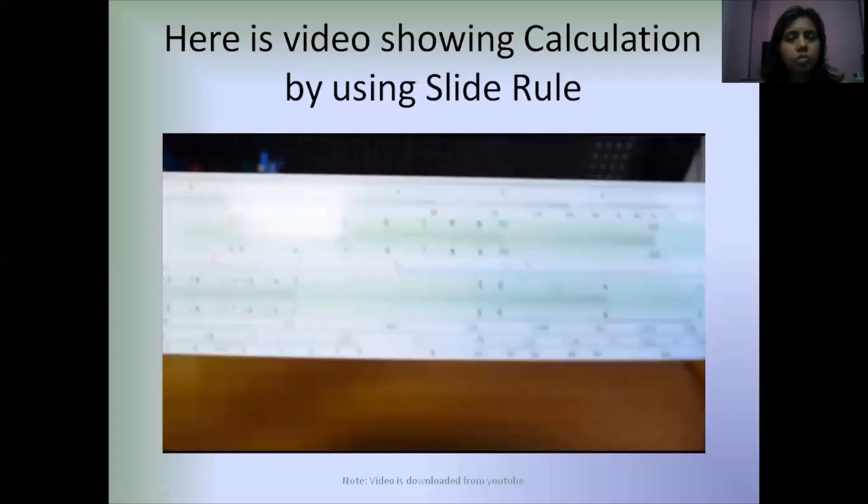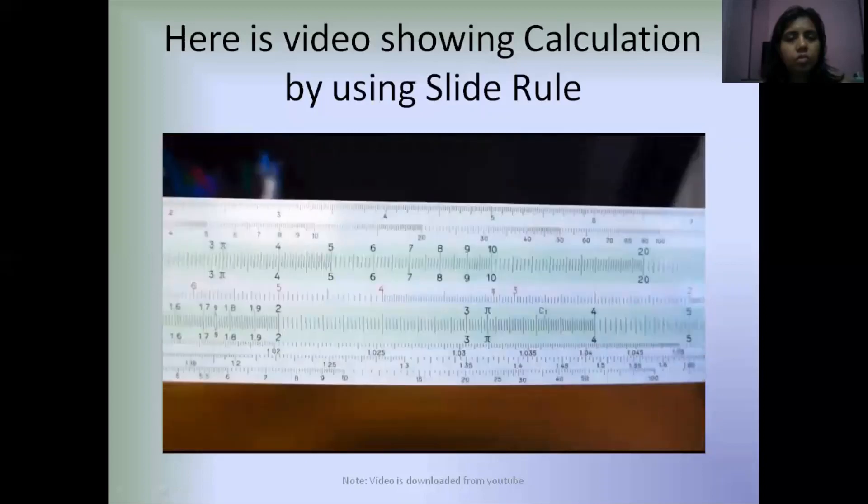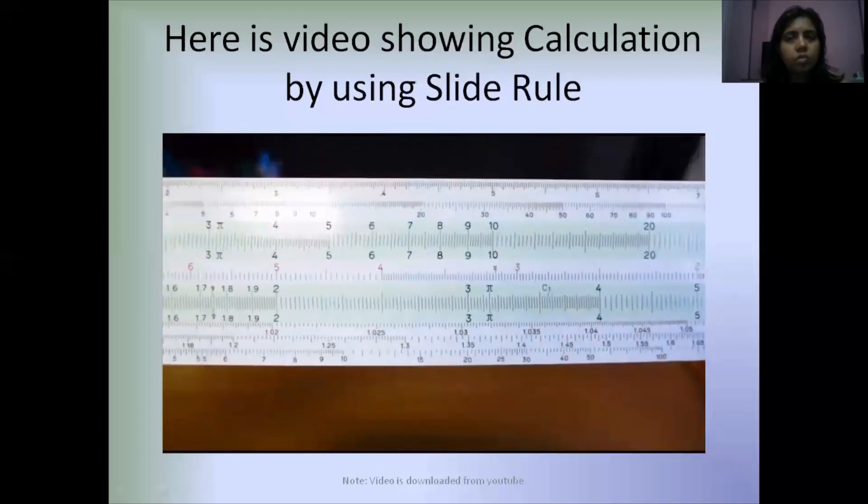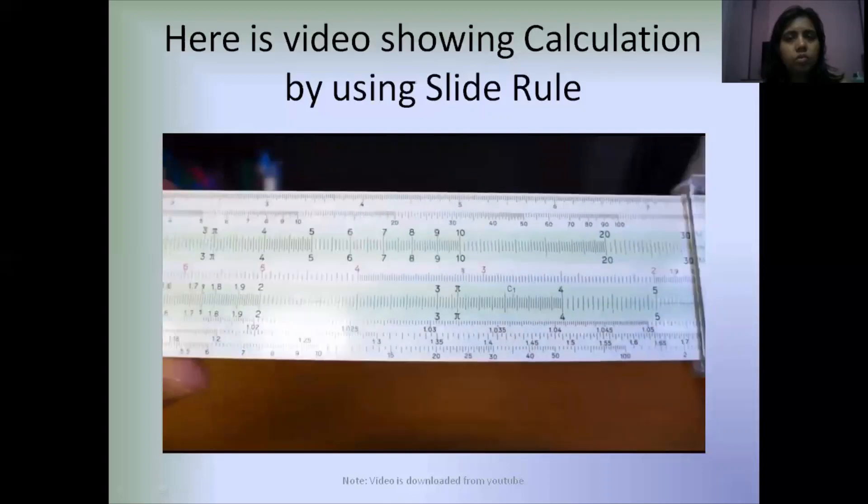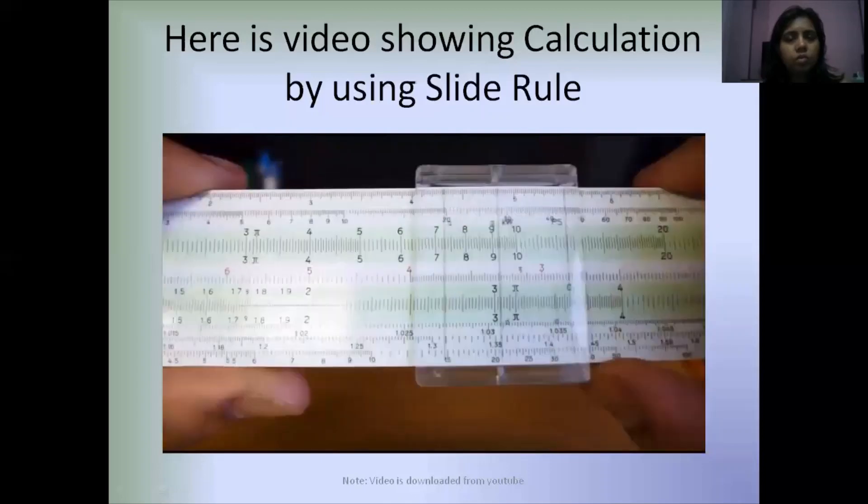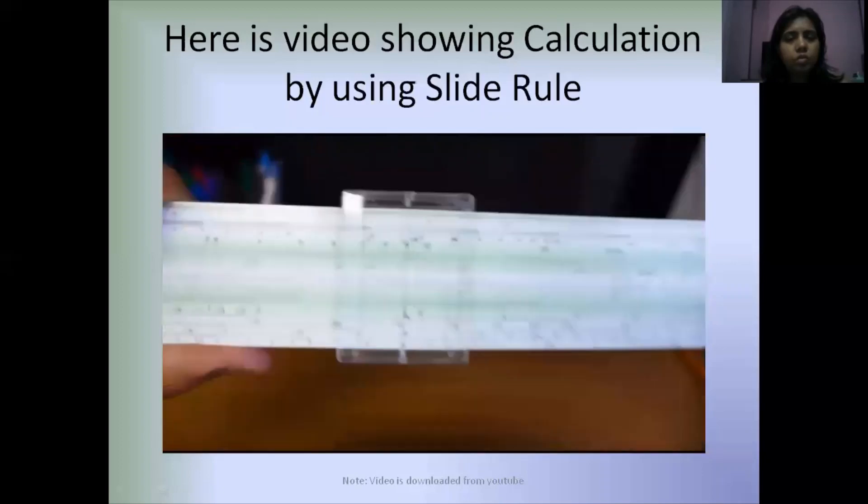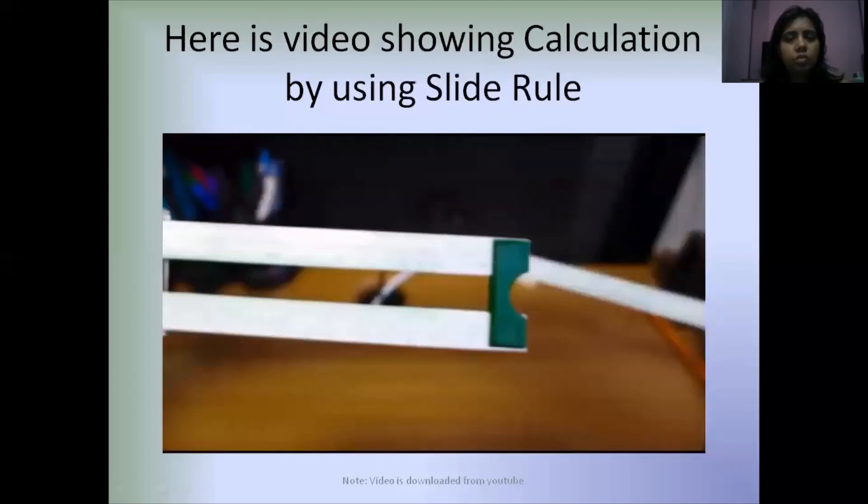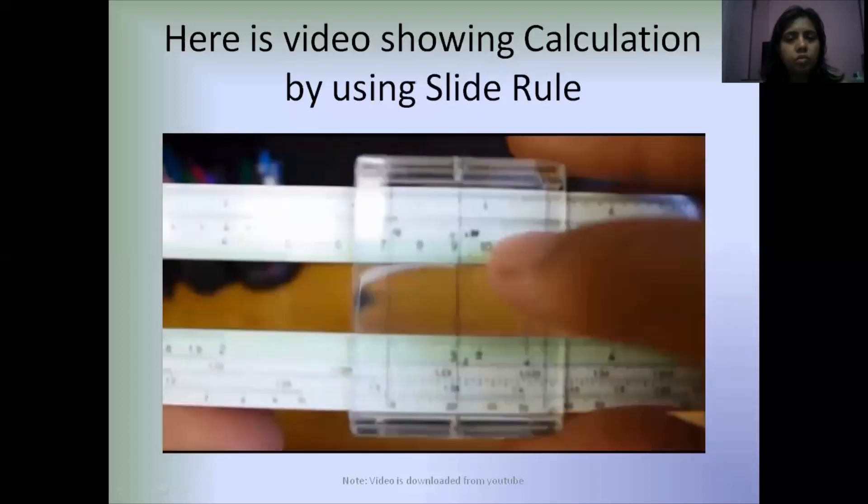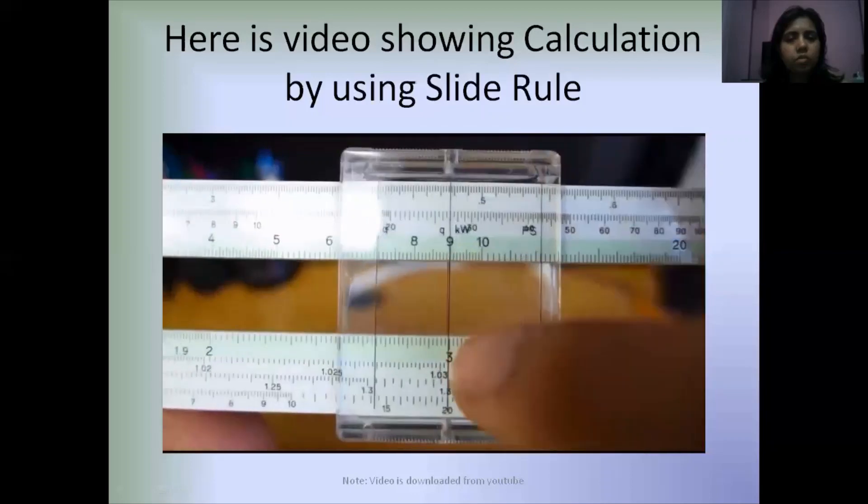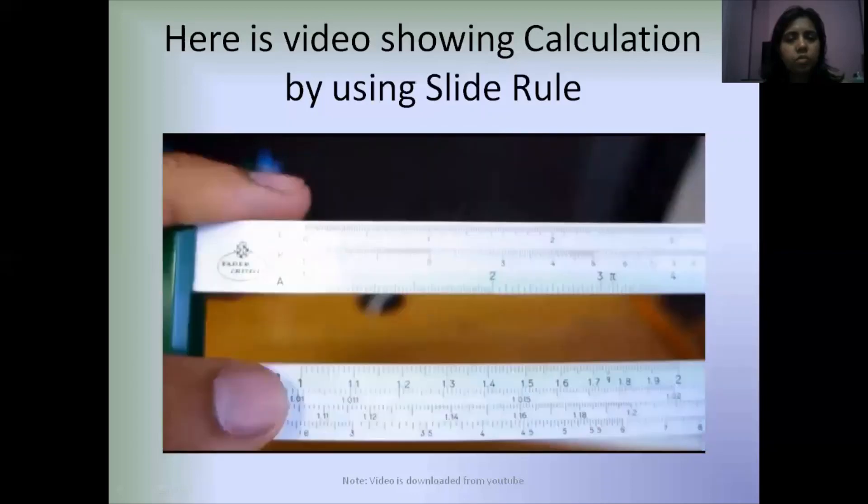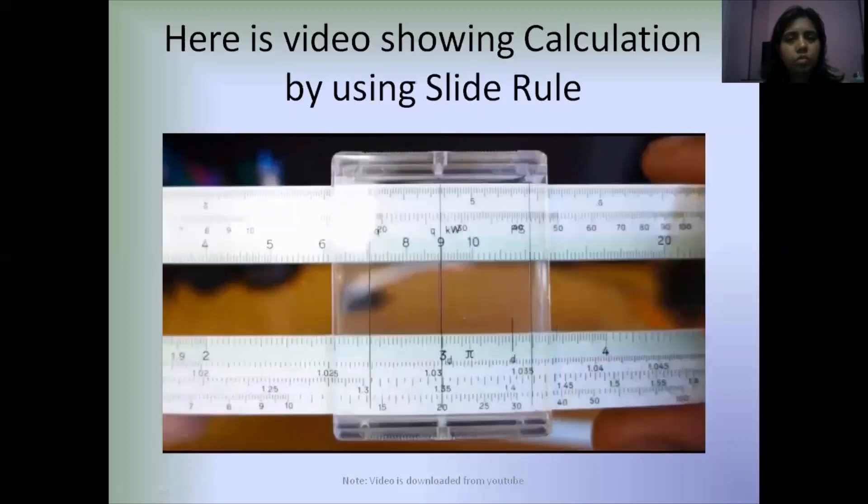Squaring is pretty simple as well. You don't have to slide the thing at all. You set the number you want to square on the bottom D scale. For example, if I want to square three, I set to three and read the answer nine off of the A scale. We're on the D scale and we read off the A scale.